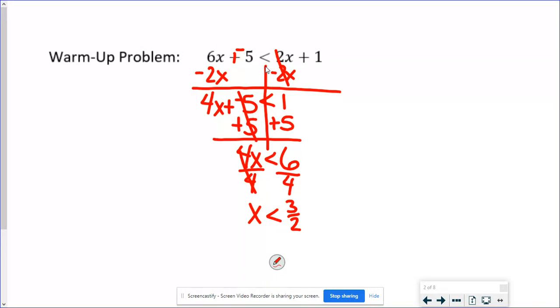If they asked you to graph this, they didn't, but if they had asked you to graph, so this is really 1.5. Here's 1, here's 2, here's 1.5, or 3 over 2. That would be an open circle because it's not equal, and we're shading to the left.